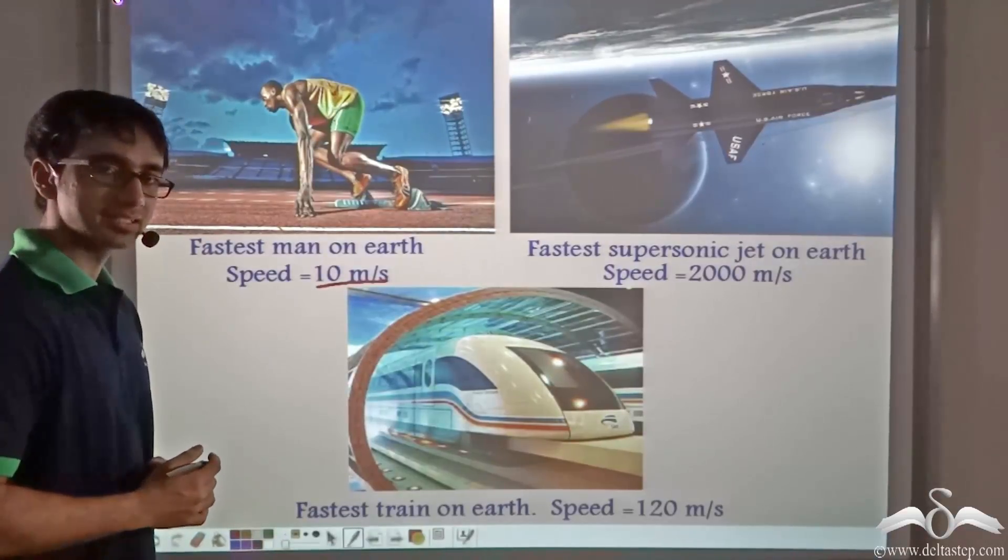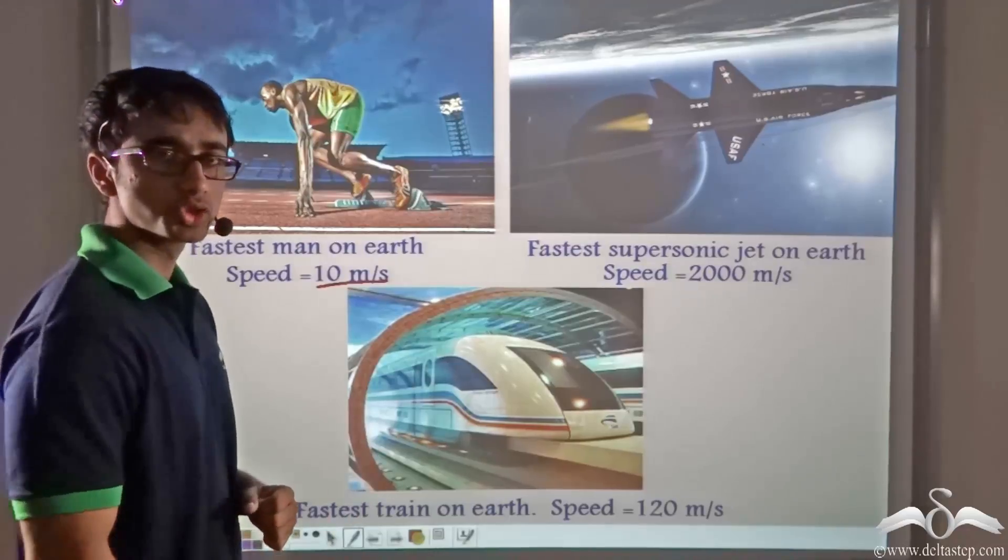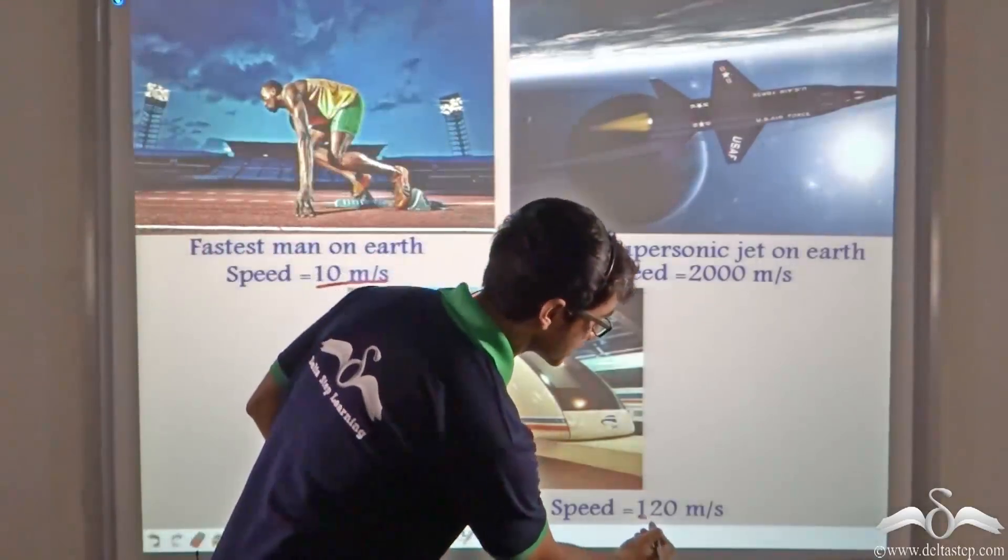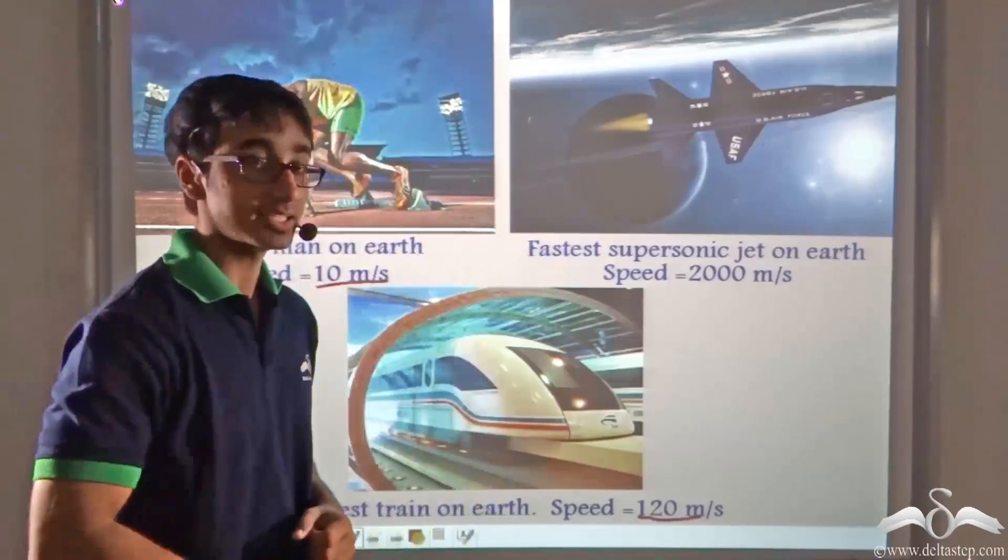Do you think light is faster than the fastest train on earth whose speed is 120 meters per second? Yes, it is.